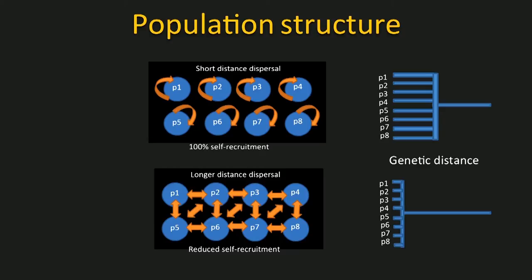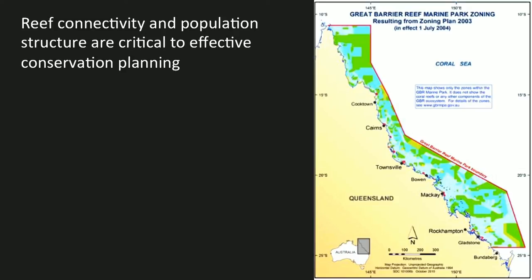In terms of the structure of the overall population, made up here by eight subpopulations, having a high degree of self-recruitment — perhaps as a result of short-distance dispersal — will increase the degree to which those populations become distinct over time. The more different the subpopulations become, the greater the genetic distance between them. If dispersal distances are larger, there is a greater exchange of individuals and genetic material between subpopulations, leading to a reduction in genetic differences. Genetic differences can be measured by a number of techniques, and essentially yield the length of the prongs in this diagram as a measure of difference between subpopulations. The issue of population structure is important within effective conservation planning, and has been taken into account in recent attempts to apply a system which recognises that some subpopulations and some reefs are in greater or lesser communication with each other via dispersal.